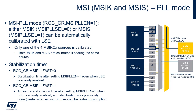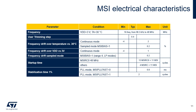The stabilization time of MSI oscillators configured in PLL mode depends on the MSI PLL fast bit. When this bit is 0, 0.8 ms is required; when this bit is 1, the time is reduced to 2 cycles when the LSE is already enabled and stabilization was previously done. This table summarizes the MSI oscillators' electrical characteristics. Minimum, typical, and maximum frequency values are indicated for operation at 30°C. The MSI frequency can be trimmed in the application with a typical step of 0.4% of the frequency. Drift according to temperature and voltage variations is indicated, and these variations can be monitored to dynamically update the calibration parameter. Start-up and stabilization times are also provided.